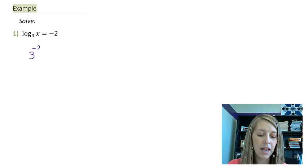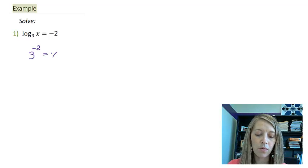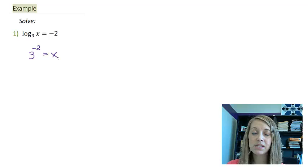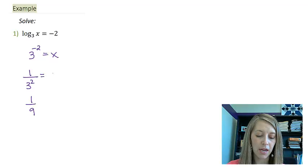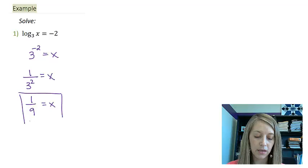this would give me 3 to the negative 2 equals x. That's as easy as it comes. All I need to do now is simplify 3 to the negative 2. That's the same thing as 1 over 3 squared, and that's 1 over 9. So our answer is x equals 1 ninth.